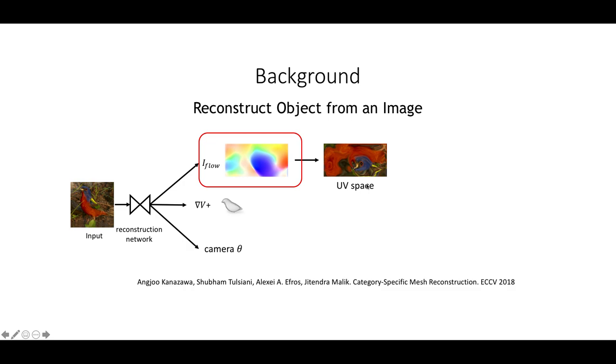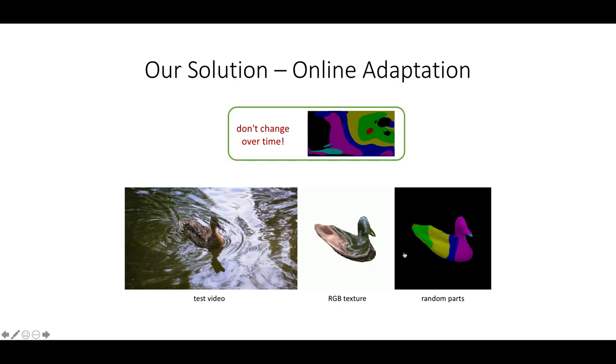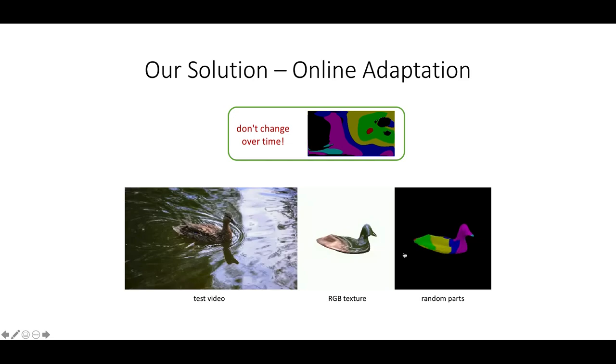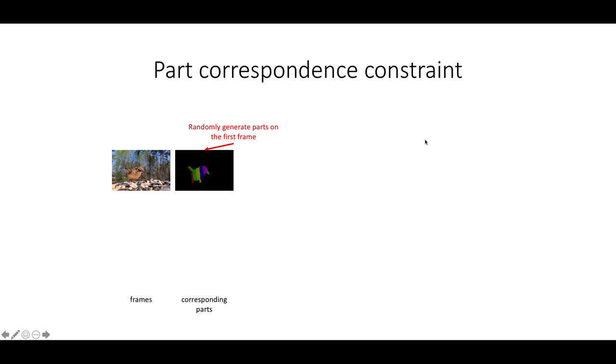Recall that the reconstruction network outputs a texture flow that can map pixels, features, or any attribute from 2D to the UV space. The UV space is an intermediate space that lays all the mesh faces in a fixed order. Since all the faces in the UV space are normalized, the space will never change with shape deformation and camera translation. Interestingly, for a single test video, if we only have one instance, that means the change only exists in the shape deformation and camera translation. That means once we project something onto the UV space, it should never change over time.